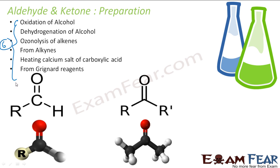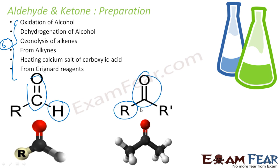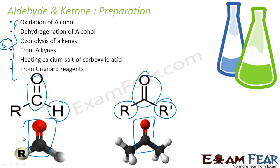Just to recap: the carbonyl group with an H is my aldehyde, and the carbonyl group with two R groups is my ketone. In the 3D view, the carboxyl group is all in one plane — the carbonyl carbon and its attached atoms are all coplanar.